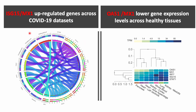Of these hub genes identified in our analysis, ISG15 and MX1 are the most conserved upregulated genes across COVID-19 datasets of immunological cells, and OAS1 and MX1 are the genes with lower expression levels in tissue-specific healthy samples.